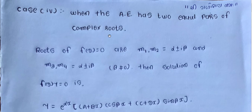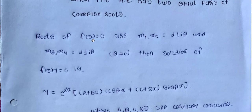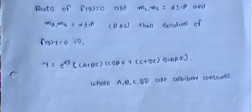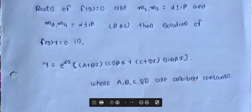When the auxiliary equation f(D) = 0 has roots m1, m2 = α ± iβ and m3, m4 = α ± iβ, where β ≠ 0, then the solution of f(D)y = 0 is: y = e^(αx) [(a + bx)cos(βx) + (c + dx)sin(βx)], where a, b, c, d are arbitrary constants.